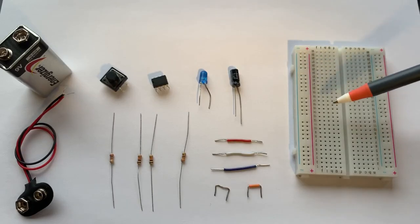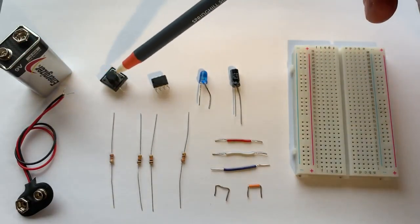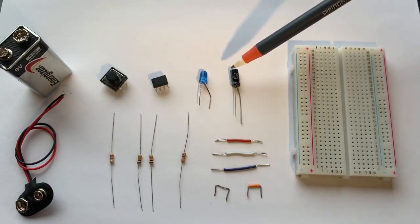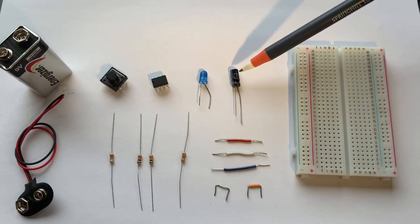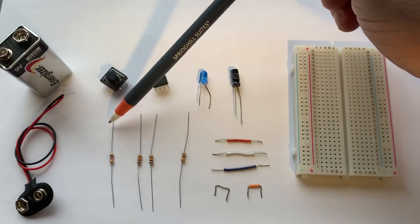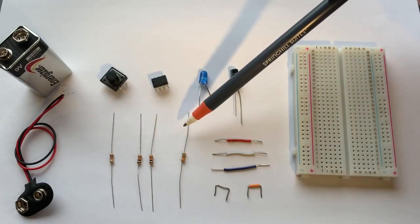The components for this build are a breadboard, a 9-volt battery, the 9-volt snap connector, the switch, LM555, I used a blue LED, a 1 microfarad electrolytic capacitor, and there's four resistors total: a 1 kilohm, two 10Ks, and one 100K.